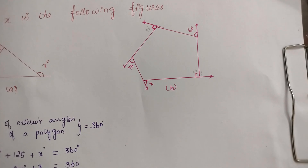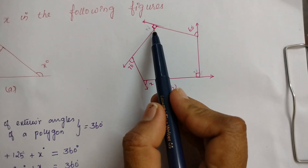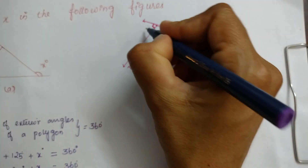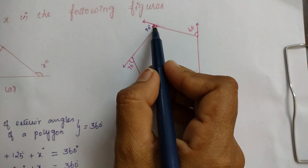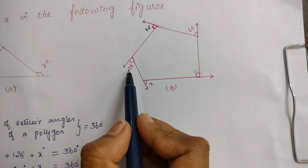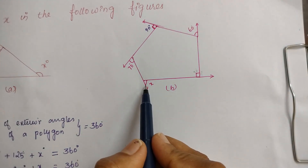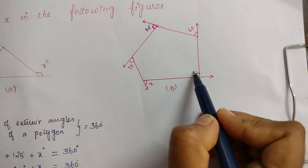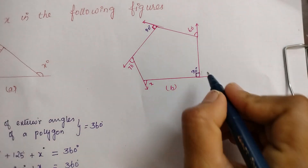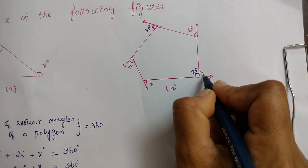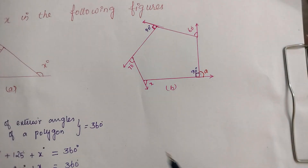Now let us take the second example. Here one angle is 60 degrees. This angle is not mentioned but here it is a right angle, so it is 90 degrees. This symbol represents a right angle which means 90 degrees. This angle is 70 and this angle is x. Here also there is a right angle, which means 90 degrees. We have to find this angle, so let us call it angle a.